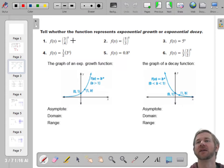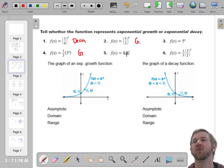So growth or decay. This is less than 1, decay. This is 3 to the X, growth. I'll just use G and D. Bigger than 1, 5 thirds, growth. 0.8, less than 1, decay. 5, bigger than 1, growth. 3 halves, bigger than 1, growth. Cool.